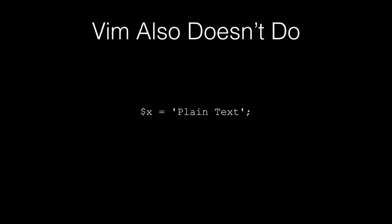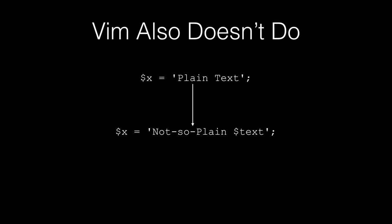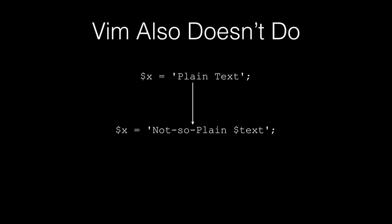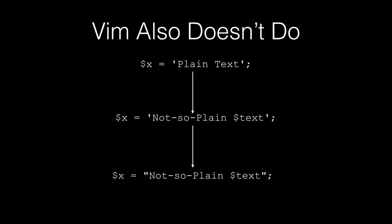Here's another example of something that is not as efficient as it could be in Vim. If you've got plain text and then you add a variable to it, in most languages single quotes mean don't interpret it and double quotes mean do interpret it. So you have to go and replace the quotes with double quotes around either side. In an idealized case where your cursor starts in the right place, you can't really do this in anything less than six keys.